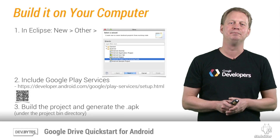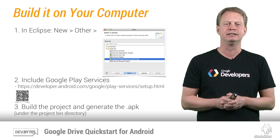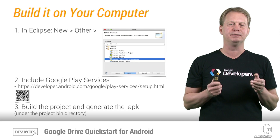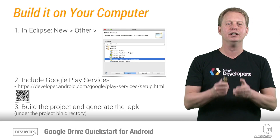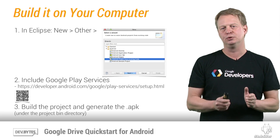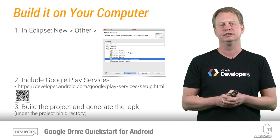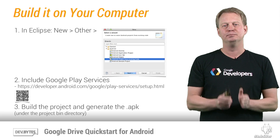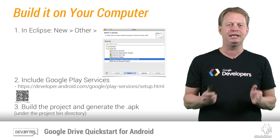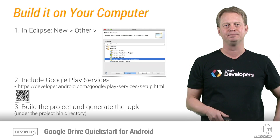If you use Eclipse, for example, you do this by creating a project, select New Other Android Project from existing code, and select the code you just downloaded. Then make sure to include Google Play services. After that, it's time to build the project and generate the APK file that will be later installed on the Android device.